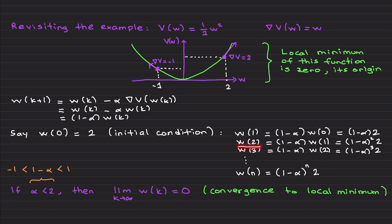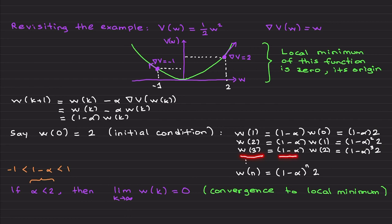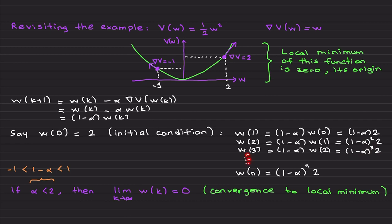Going to the second step: w₂ = (1 - alpha) times w₁. Inserting w₁, we get (1 - alpha)² times 2. Then w₃ = (1 - alpha)³ times 2. If you repeat this for n steps you get (1 - alpha)ⁿ times 2. You want this to be a convergent sequence in order to find the local minimum, so you need to choose alpha appropriately.